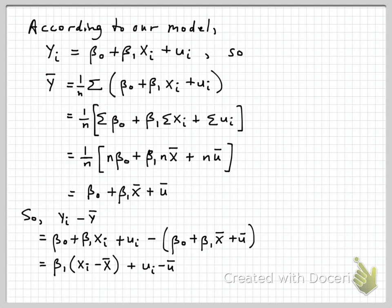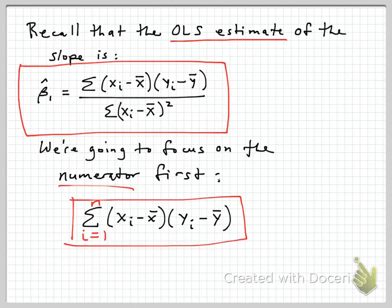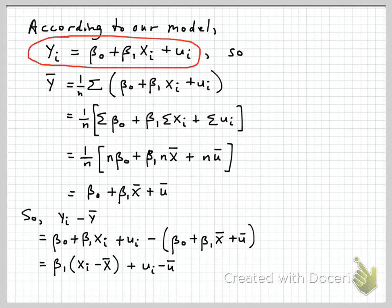Let's do a few preliminary things first so we can make progress with the main part of the proof. Remember that our model is: yi equals beta 0 plus beta 1 times xi plus the error term ui — there are other factors that go into determining y other than x, and those go into the error term. This implies that y bar, the sample mean of y, is 1 over n times the sum across all individuals. The sum of the beta 0s gives n times beta 0, the sum of the x's is n times x bar, and u bar is the sample mean of the error terms. The n's cancel and we're left with y bar equals beta 0 plus beta 1 times x bar plus u bar.